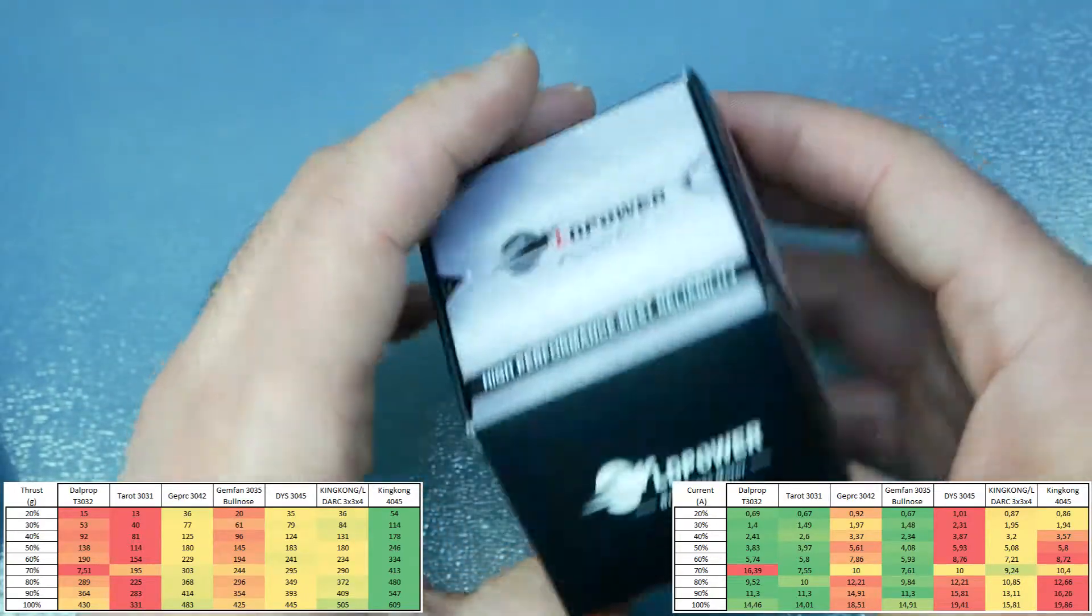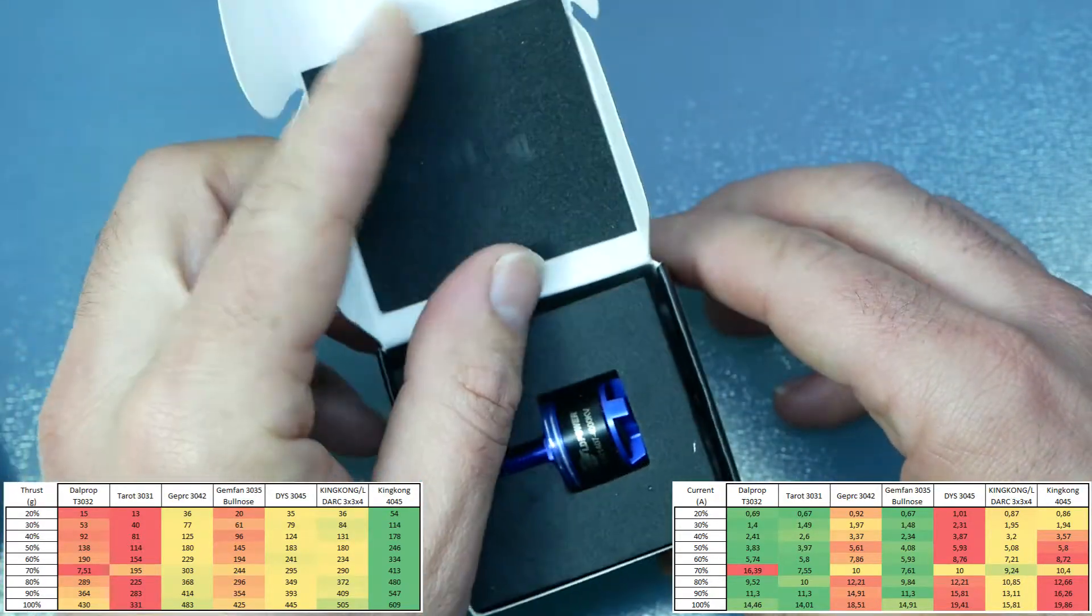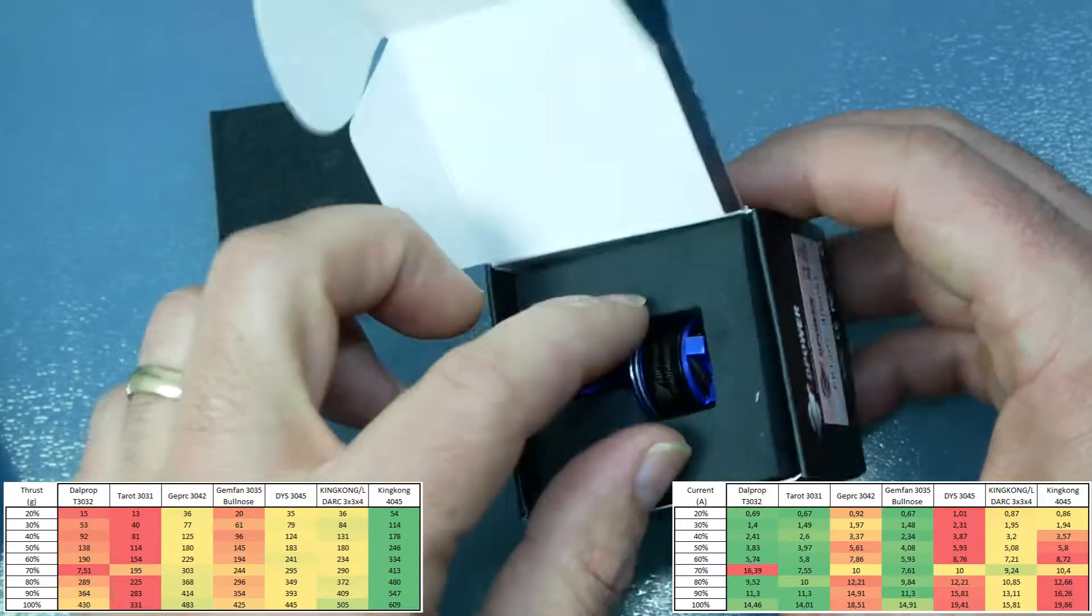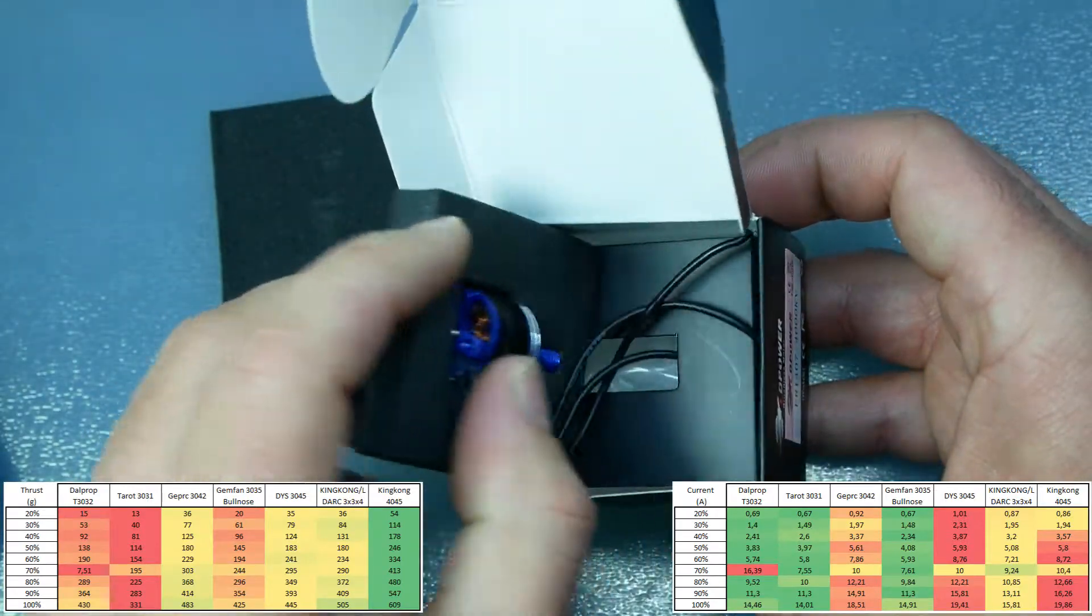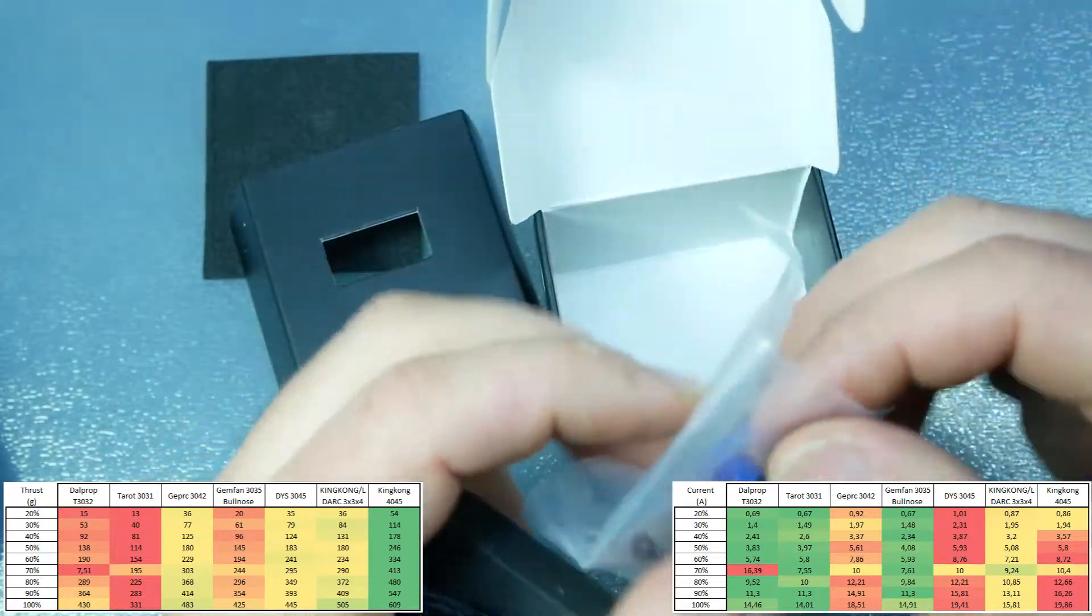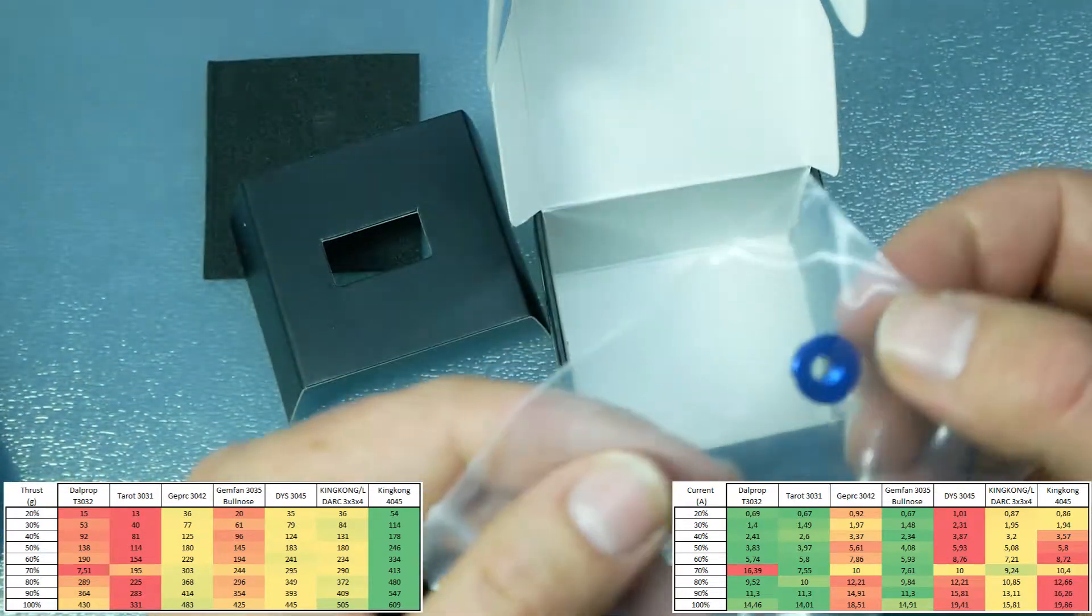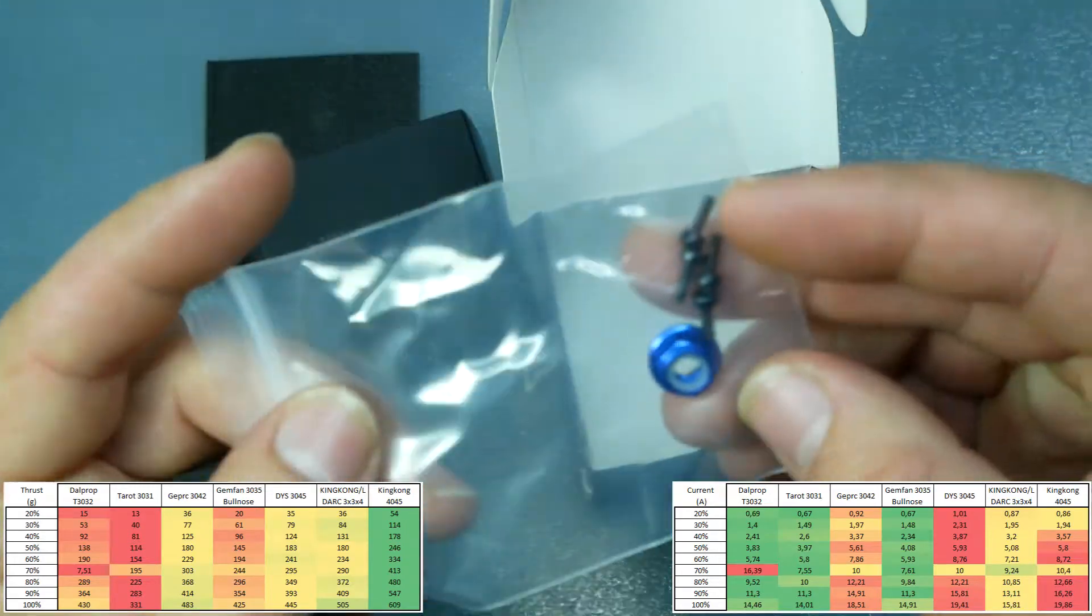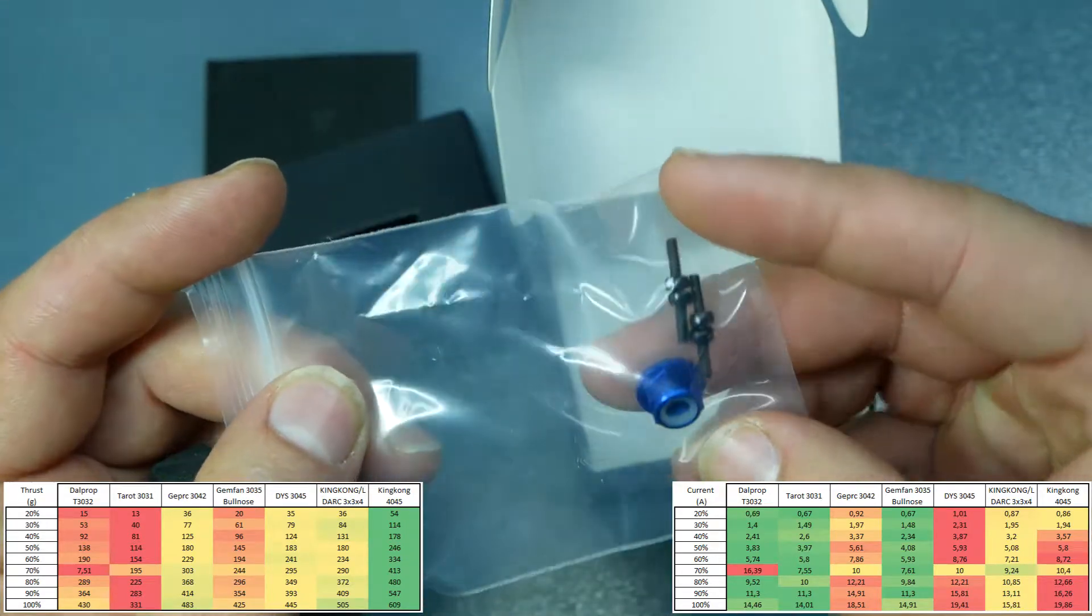It came inside the cardboard box with a simple presentation. The motor, the wires, and the nuts and screws to secure the motor and propellers.